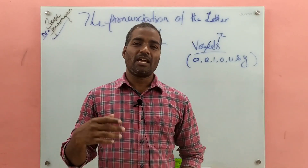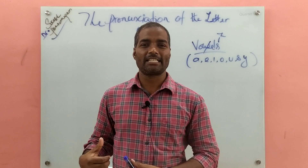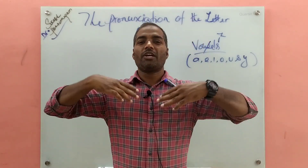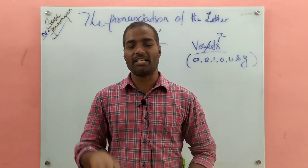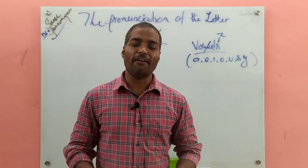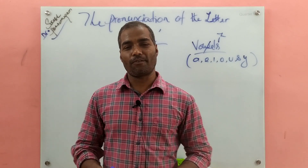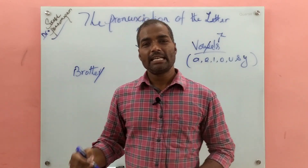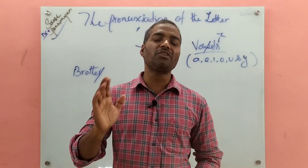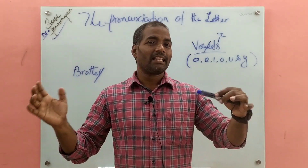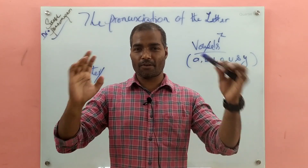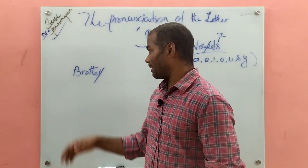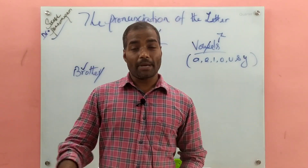This is the rule we're going to apply to determine when R is pronounced and when it is not. In British English, the letter R is sometimes pronounced, sometimes silent. Here's how to find out: if the letter R is followed by a vowel sound, you have to pronounce the R. For example, 'brother' — but when a word ends with the letter R, it is silent. Any word ending in R is silent.